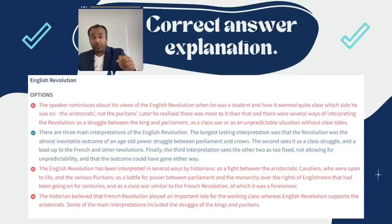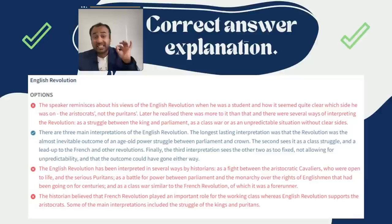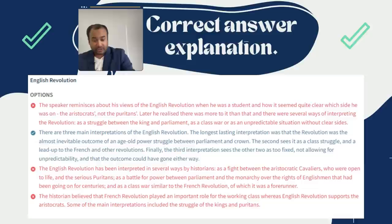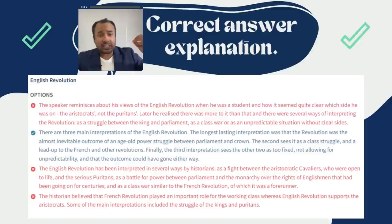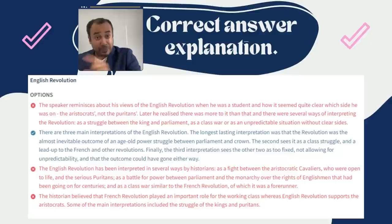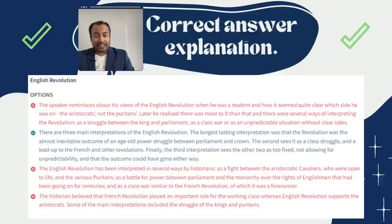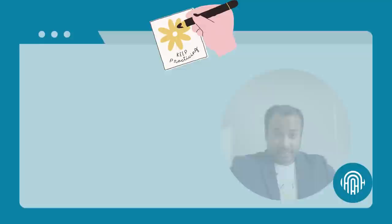Some of you also picked C: 'The English Revolution has been interpreted in several ways by historians.' Here they said 'several ways,' but the audio specifically said 'three main approaches.' The word 'several' could mean five, six, seven, fifteen, or even twenty — it has no definite number. But the audio specifically mentioned three. So those who selected B are correct. The first 10-15 seconds will match directly — that's the trick.